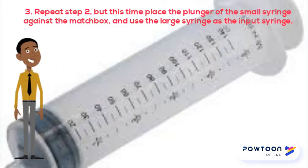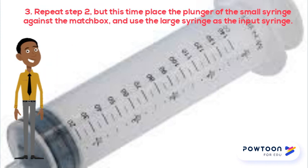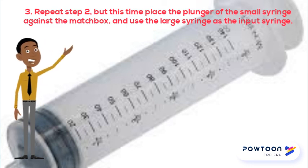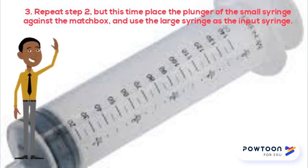And finally, for point three, repeat step two, but this time place the plunger of the small syringe against the matchbox and use the large syringe as the input syringe.